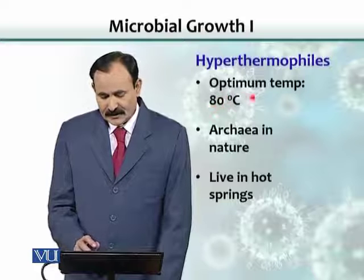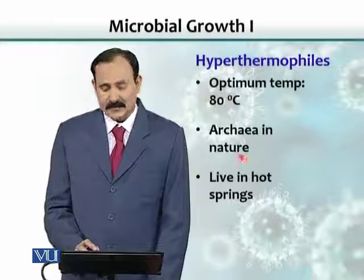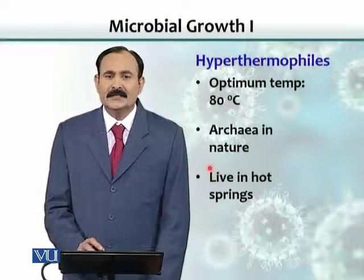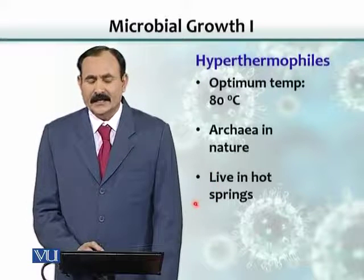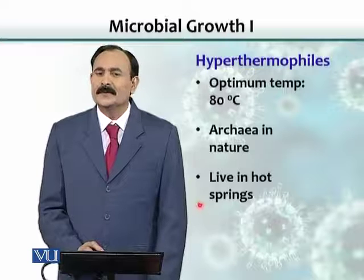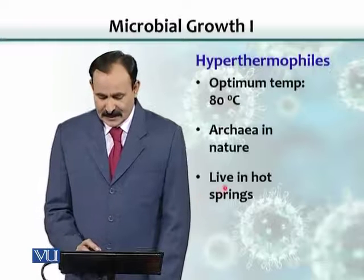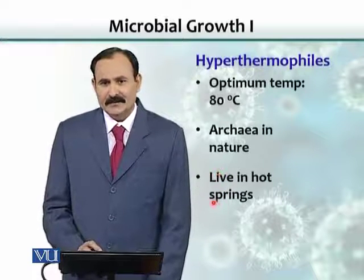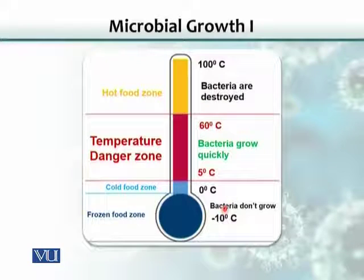Hyperthermophiles have an optimum temperature of 80 degrees Celsius. These are archaea found in hot springs. Importantly, there is an enzyme — DNA polymerase — used in PCR (polymerase chain reaction) that was taken from one of these bacteria. The bacterium is named Thermus aquaticus.